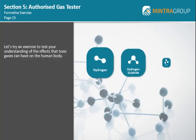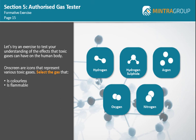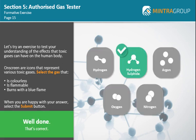Let's try an exercise to test your understanding of the effects that toxic gases can have on the human body. On screen are icons that represent various toxic gases. Select the gas that is colourless, is flammable and burns with a blue flame. When you are happy with your answer, select the submit button. Well done! That's correct!